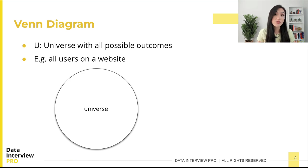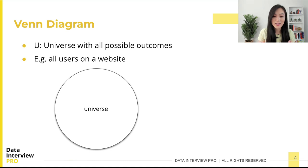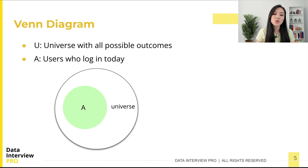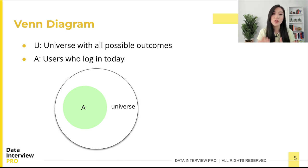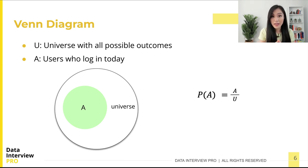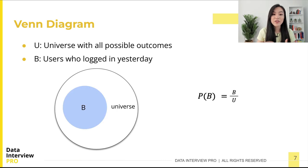Let's say we have a universe with all possible outcomes, and we're interested in some subset of them — namely, some event. For example, we study the behaviors of users on a website. Our universe is all the users on our website. Let's consider two possible outcomes for any particular user: whether they log in today or not. We use A in the Venn diagram to show the event of users who log in today. The probability that a randomly selected user logs in today is simply the number of elements in A divided by the number of elements in the universe — A divided by U.